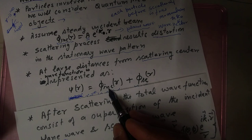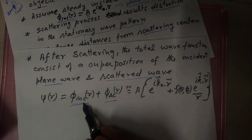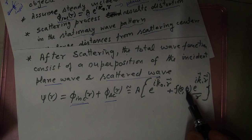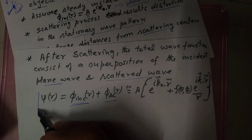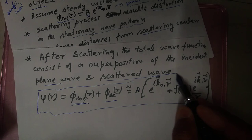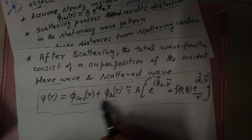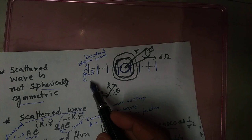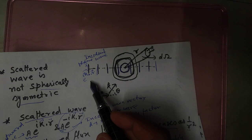The total wave function after scattering consists of a superposition of the incident plane wave and the scattered wave. For the incident wave we wrote A e^(iK₀·r), and the scattered wave is f(θ, φ) e^(iK·r) over R. So the total wave function after scattering is: ψ = A [e^(iK₀·r) + f(θ, φ) e^(iK·r)/r]. In the diagram, this is the incident direction, and the particle gets scattered making an angle theta. This is all about the wave mechanical picture of the scattering process.